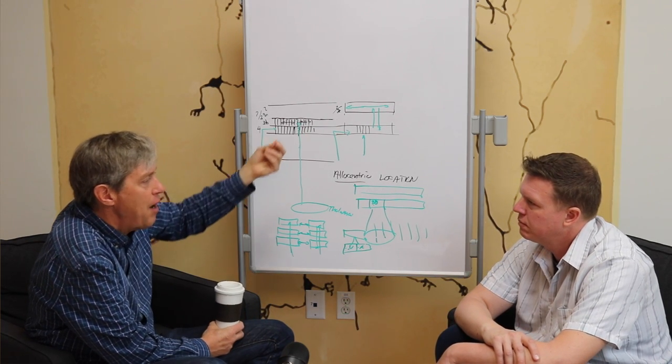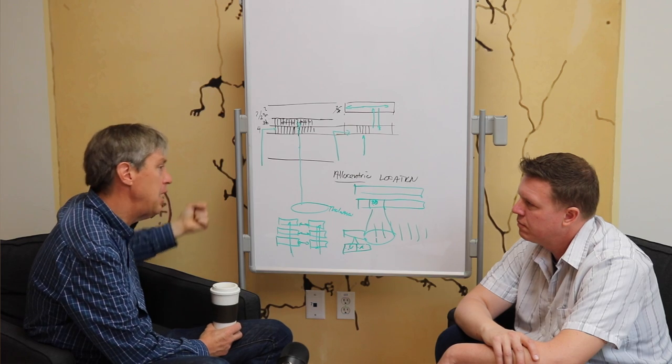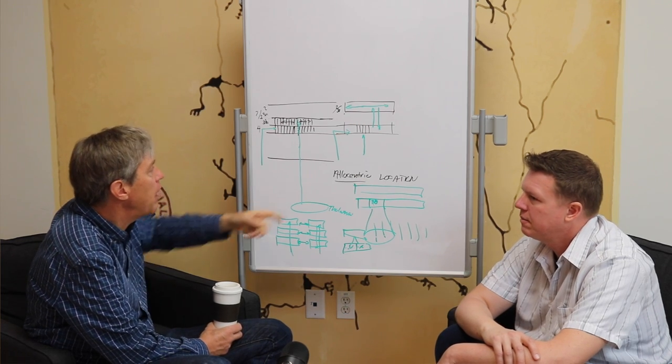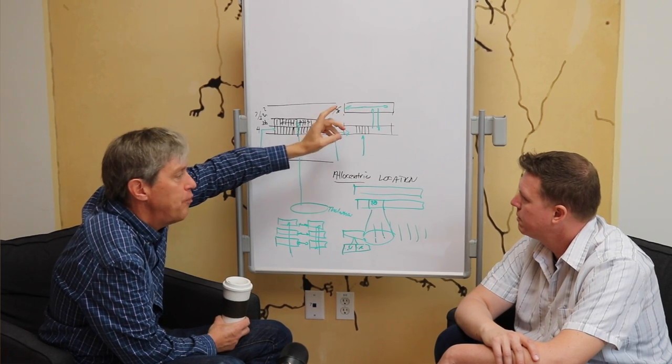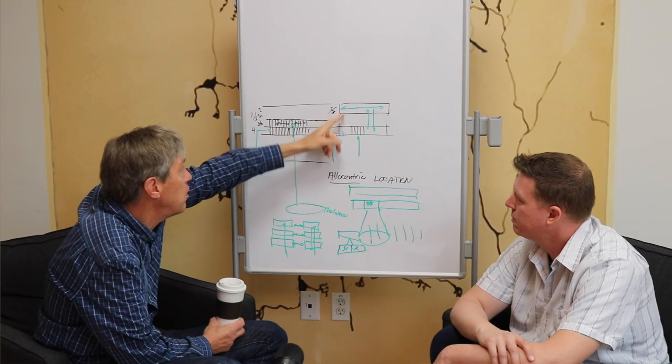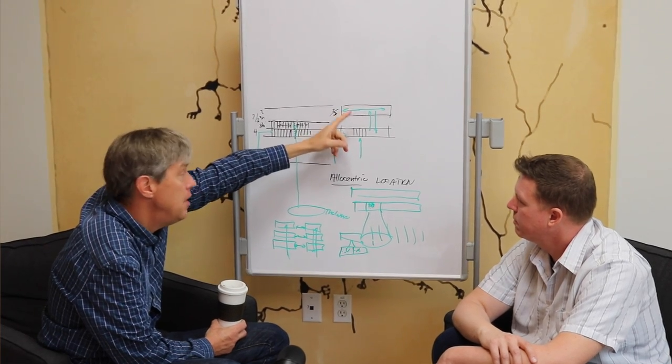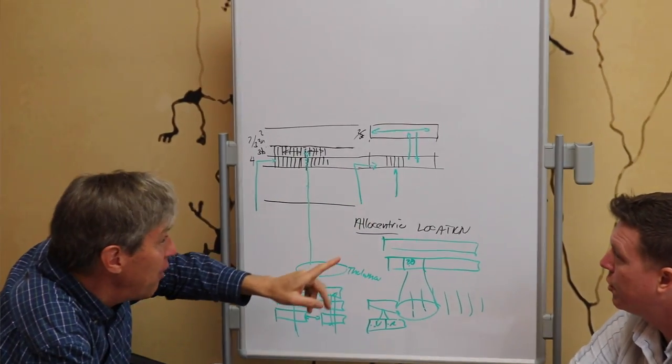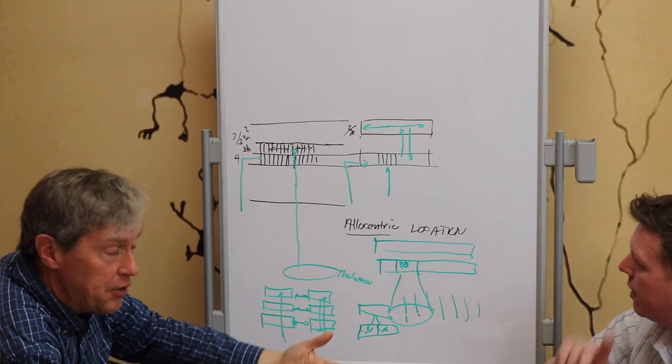The distinction is which ones are driving cells and which ones are biasing cells. So like layer 4 projects to layer 2, 3, that's a pooling layer. These layer 4 are going to make the layer 2, 3 cells fire. The layer 2, 3 cells project back to layer 4. They don't make those cells fire. But they're biasing. They're depolarizing them.